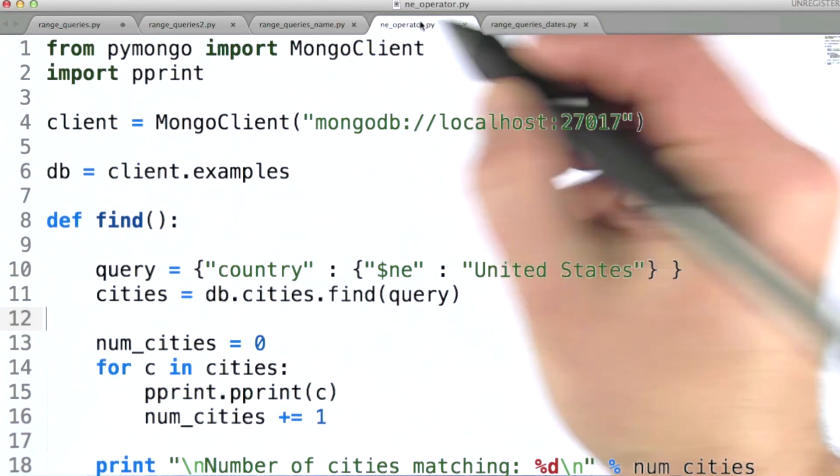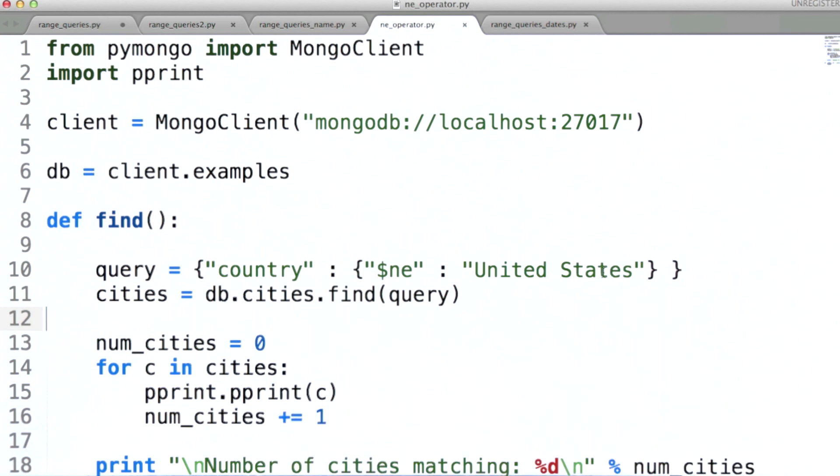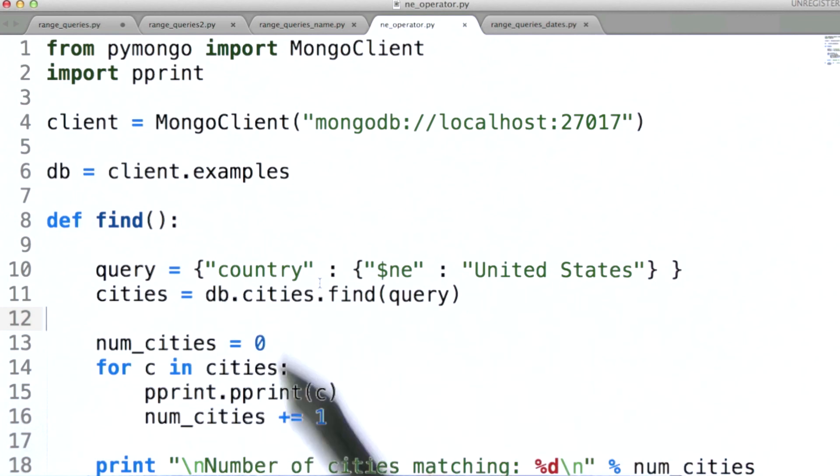Finally, we can also use the not equals operator to, for example, in this case, find all cities with a country that's not equal to the United States.